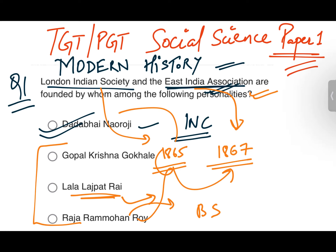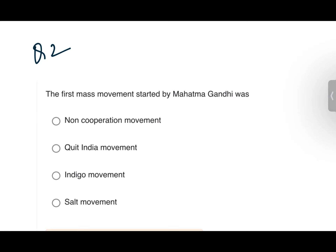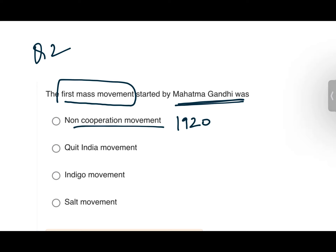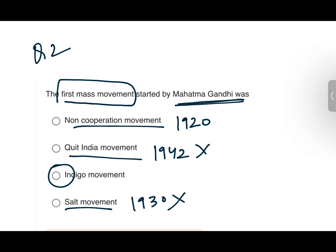Question number two: What was the first mass movement started by Mahatma Gandhi? Non-Cooperation Movement happened in 1920, Quit India Movement in 1942 — that's wrong. Salt Movement (Dandi March) was in 1930 — that's also wrong. So now we need to look at the Indigo Movement or Non-Cooperation Movement.